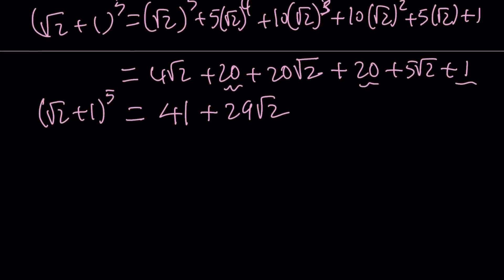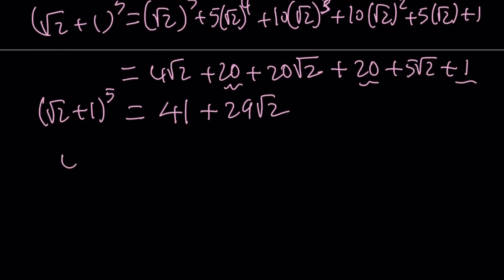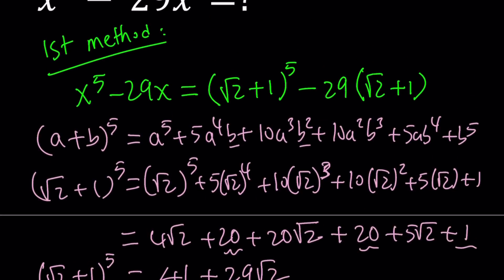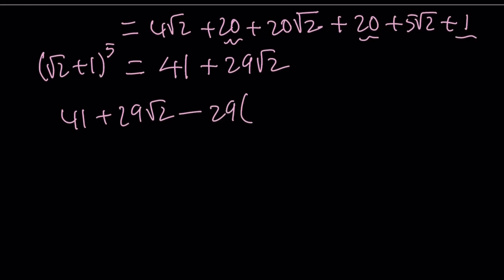So this is the part where we raise (√2 + 1) to the 5th power, but we've got to subtract something from it. So now we're going to do 41 + 29√2 minus 29 times (√2 + 1).